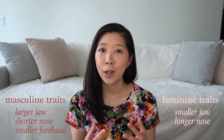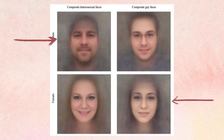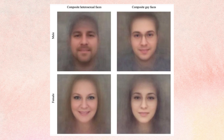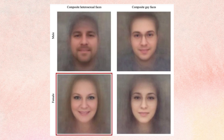Another point the original researchers made was that face shape is also an indicator of sexual orientation — more masculine traits being a larger jaw, shorter nose, smaller forehead, and more feminine traits being smaller jaw, longer nose, and larger forehead. Blaise points out that the nostrils of straight men are actually larger than those of gay men, and the nostrils of straight women look smaller than those of lesbian women, which tells you something about the camera angle used for dating profile selfies. Straight men likely take selfies from slightly below, making their jaws look larger and noses shorter, while straight women may shoot from above, making their foreheads and eyes look bigger and their jaws smaller.